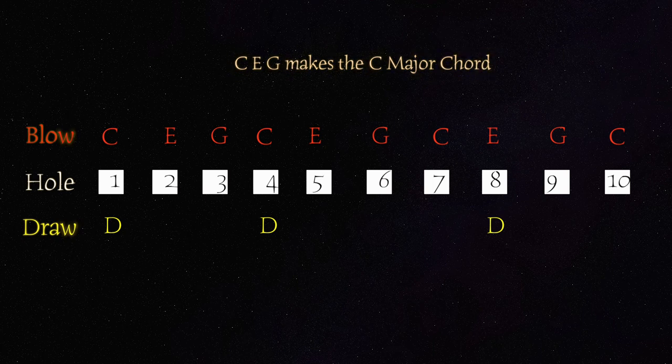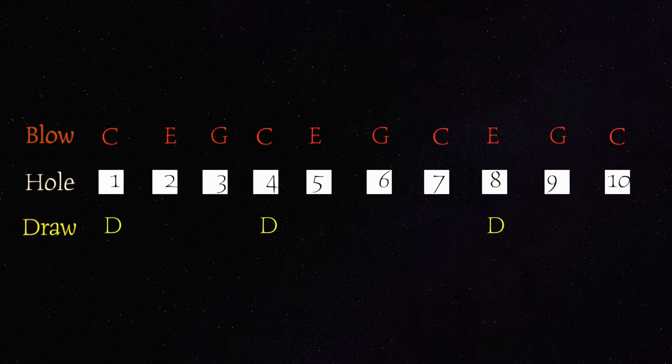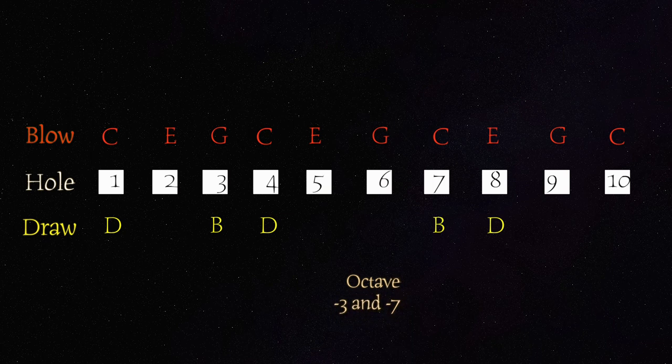So let's move on to the next octave, which is the 3 and 7 octave. The 3 plays a B note. The 7 draw is the octave. So that's a B note as well.